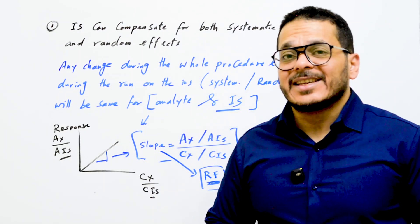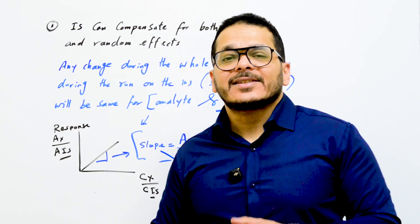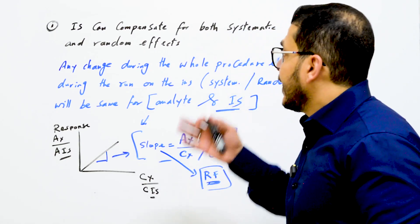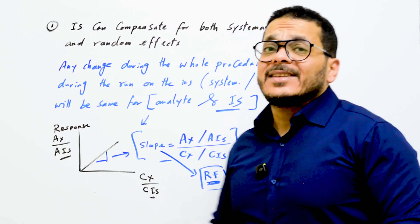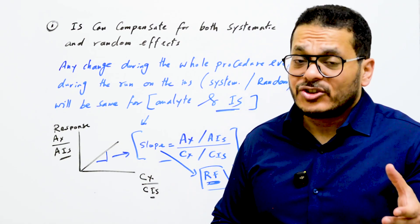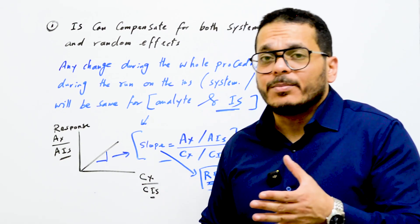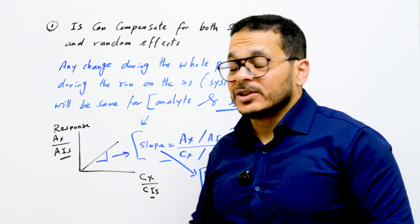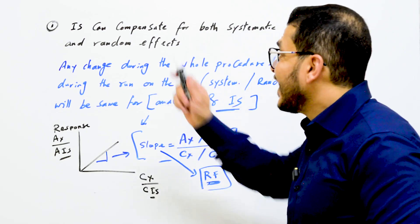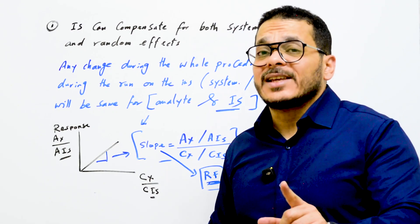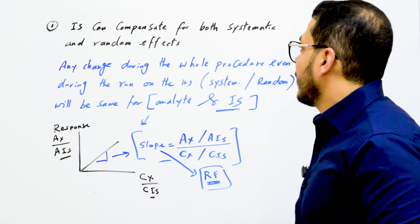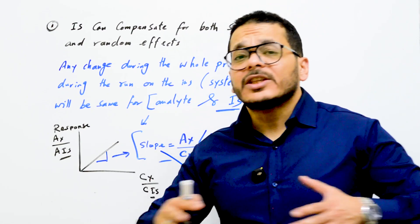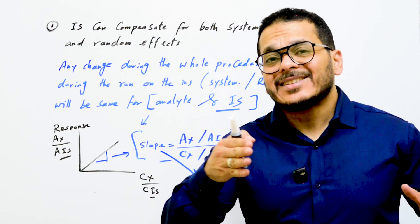You should select the internal standard based on the target analyte you are analyzing. As I mentioned, the internal standard compensates for the matrix effect — it helps remove the effect of the matrix on your target analyte. The internal standard can compensate for both systematic and random effects during the whole procedure.